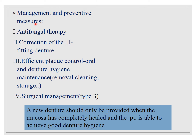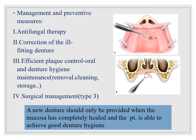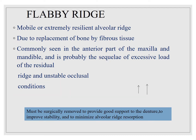For management and prevention: antifungal therapies, mouthwashes, and gels can be advised according to the patient's inflammatory changes. Second is correction of ill-fitting dentures. Third is efficient plaque control and oral hygiene maintenance — removal, cleaning, and storage. Fourth is surgical management for Type 3, where granulation tissue must be excised. The patient should not wear the denture until healing is complete, and then only a new denture can be made with good denture hygiene.